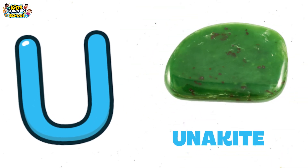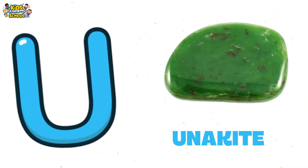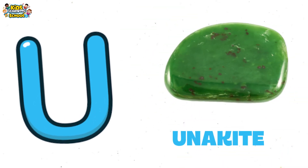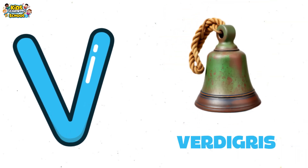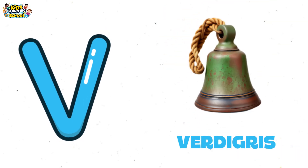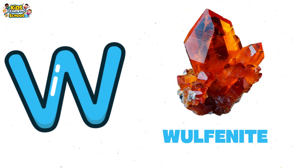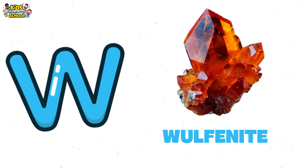U is for unakite, green and pink blend. V is for verdigris, copper's shiny friend. W is for wulfenite, orange and thin.